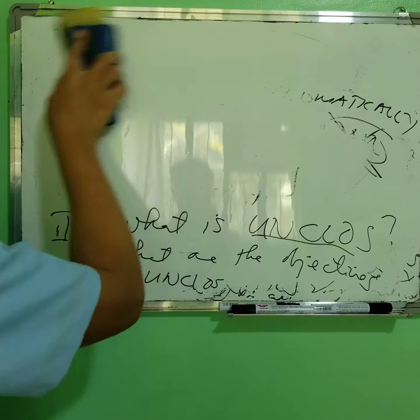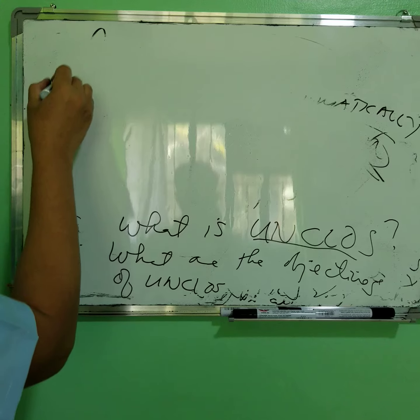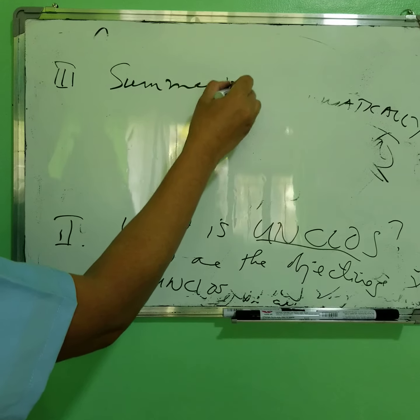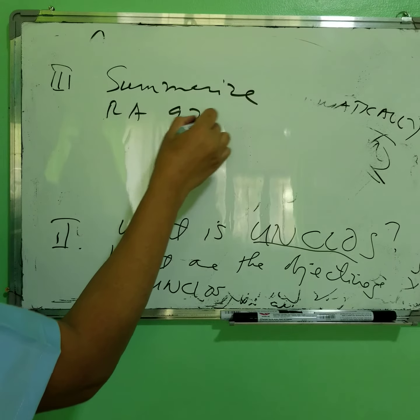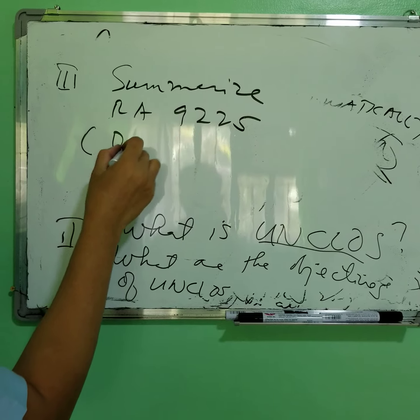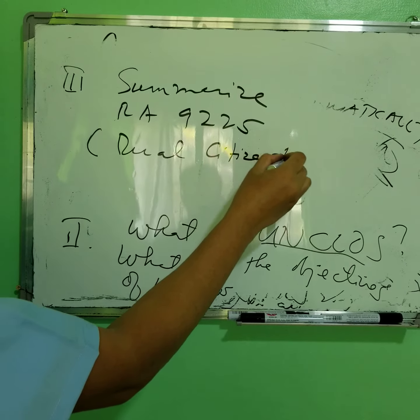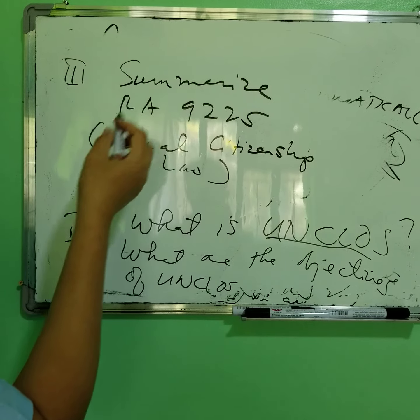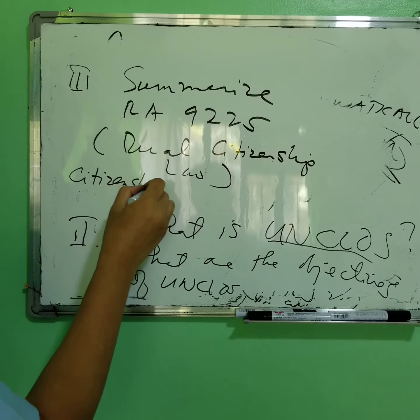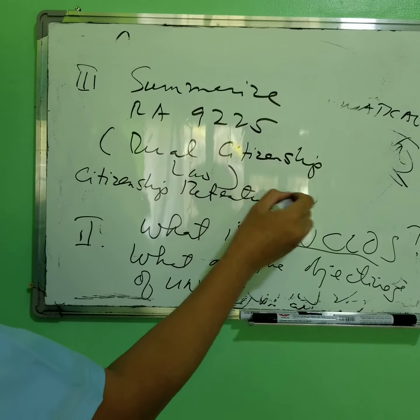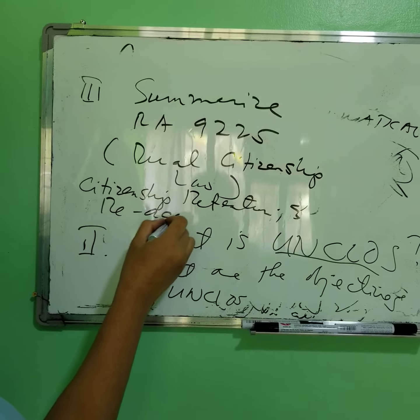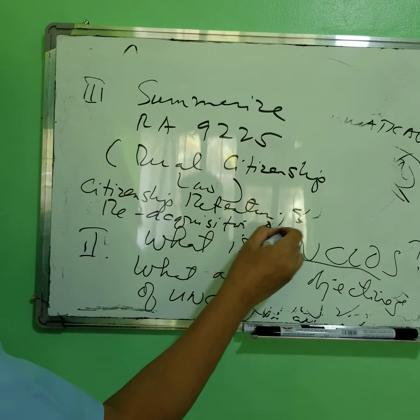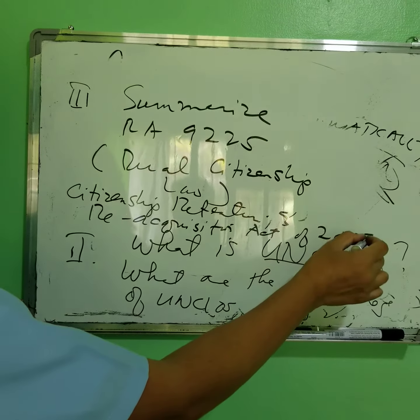Number three, your assignment would be to summarize RA 9225, or what we call the Dual Citizenship Law — also known as the Citizenship Retention and Reacquisition Act of 2003. So it's a 2003 law on Dual Citizenship. Put that in your portfolio as assignment number one.